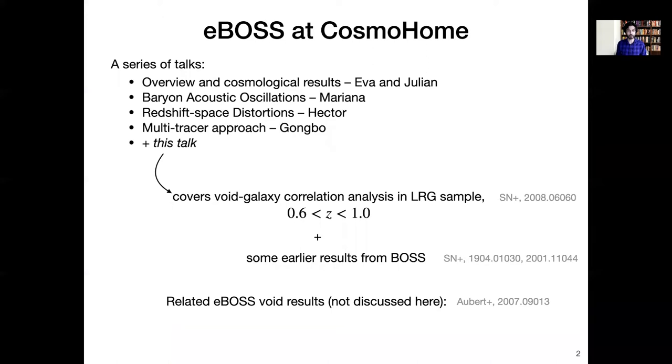This talk is part of a series of related eBOSS talks at this conference, including the talk by Eva and Julian on the overview of eBOSS and the main cosmological results, and then we have a talk by Mariana on baryon acoustic oscillations, Hector on redshift space distortions, Gonbo talking about the multi-tracer approach, and then this talk which covers the void galaxy correlation analysis from the luminous red galaxy sample between redshifts of 0.6 and 1. I'll also briefly mention some earlier results from a very similar analysis that we performed on BOSS data from a previous data release.